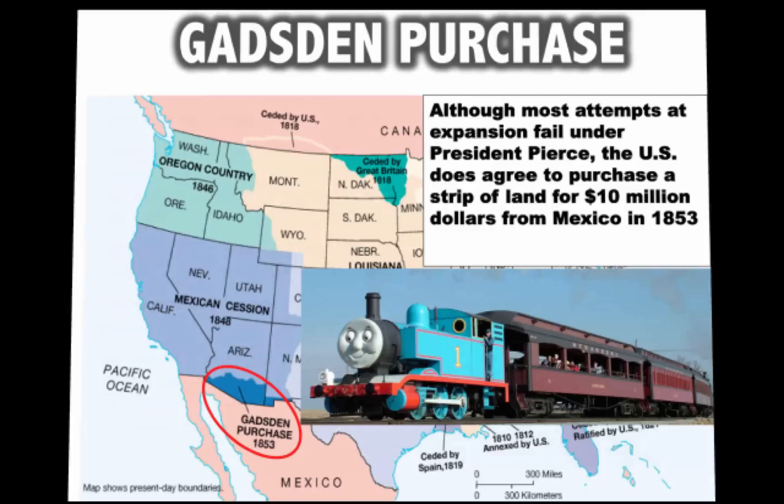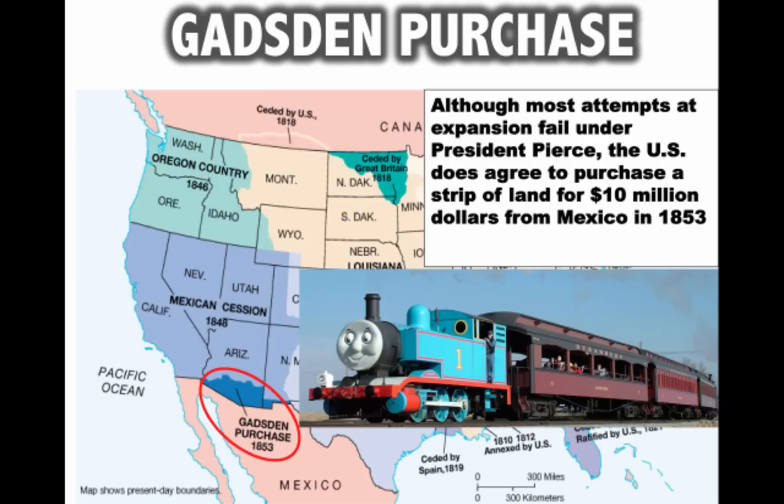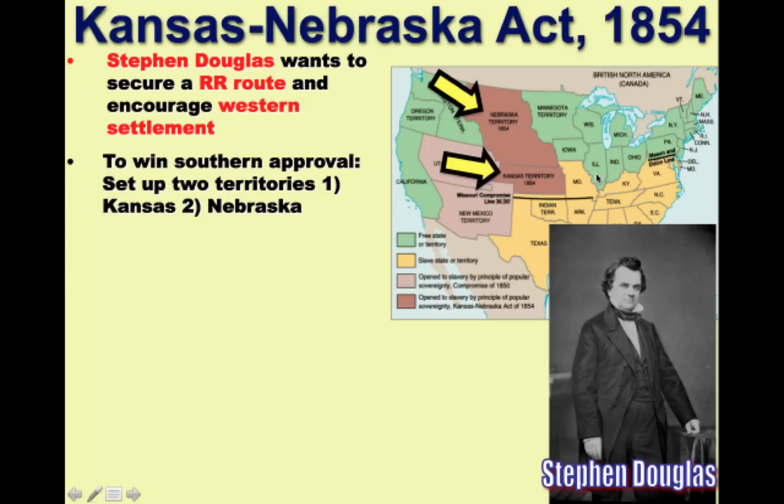Although most attempts at expansion fail under President Pierce, the U.S. does agree to purchase a strip of land for $10 million from Mexico in 1853. This is called the Gadsden Purchase — we buy this land from Mexico in order to allow for the building of a future transcontinental railroad route. The big event to know about is the Kansas-Nebraska Act in 1854. Stephen Douglas, a Northern Democrat from the state of Illinois, wants to secure a railroad route through his home state of Illinois out to the West.